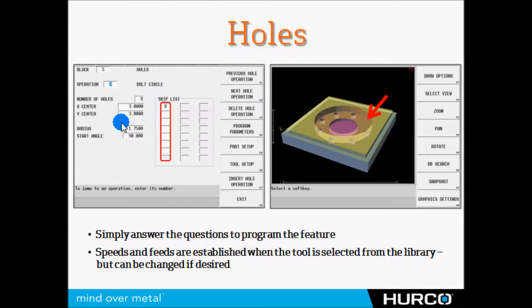Then I give it the bolt circle. How many holes? In this case there are only seven, but they are equally spaced as if there were eight on this bolt circle, so I put the number eight. I give it the center, the radius of the bolt circle, and the start angle — where hole number one is located. In this case the 12 o'clock position, which is 90 degrees since three o'clock is zero. Counting counterclockwise from that position, hole number eight is the one I don't need, so I put eight in the skip list and it omits that hole from the bolt circle.